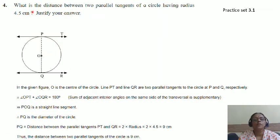Your question is, what is the distance between two parallel tangents of a circle having radius 4.5 cm? Justify your answer. This is the fourth question from your practice set 3.1. Observe the circle with center O. PT and QR are two parallel tangents to the circle at P and Q.